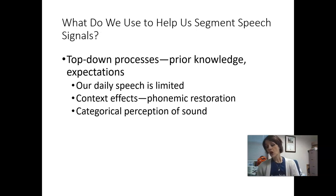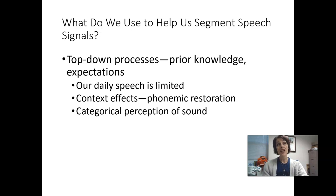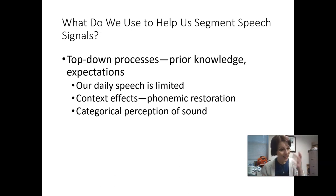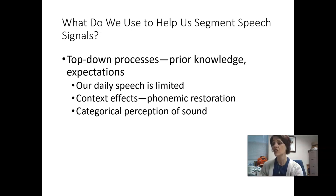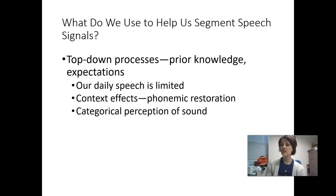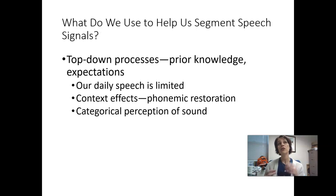There was a study where people were presented with a sentence like 'The members of the legislature convened on the Capitol yesterday.' Under certain circumstances, a cough was superimposed in the word 'legislature,' so it sounded more like 'legis[cough]ture.' But most people still heard the word 'legislature.' When asked where the cough occurred, they couldn't tell you — they weren't sure if it was at the first or second S. They were able to use context to fill in the missing phoneme.